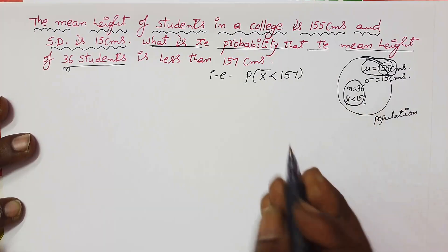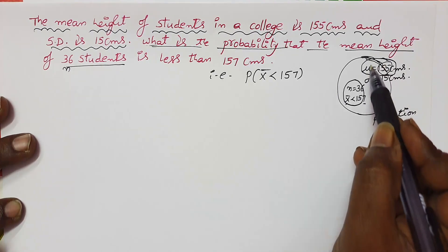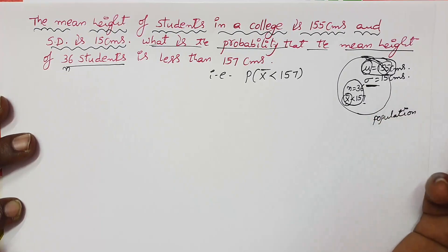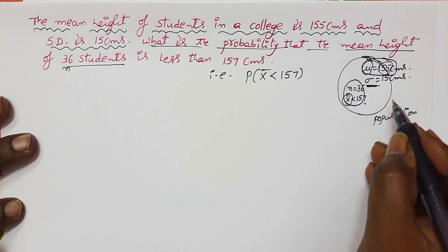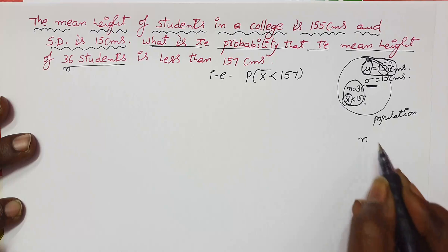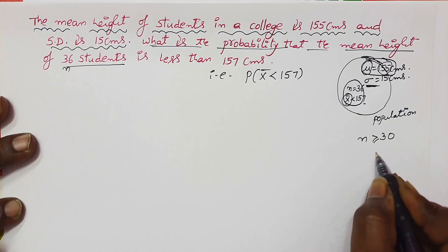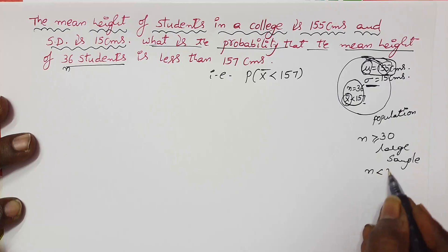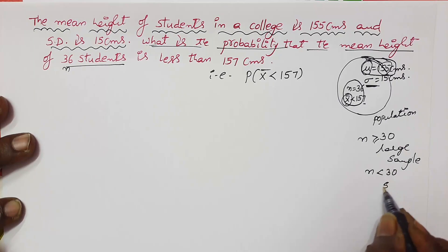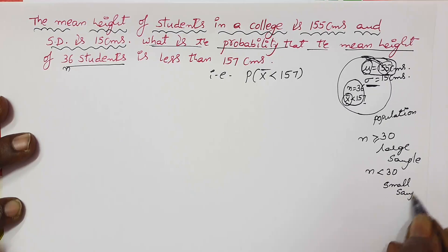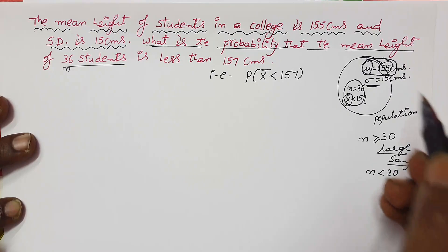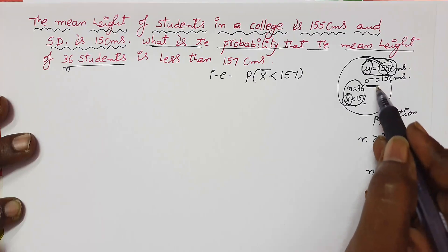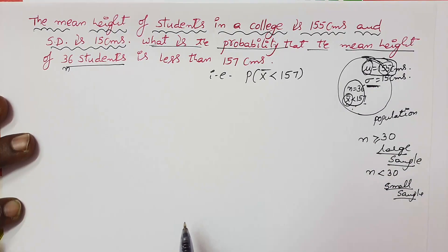Don't forget the notations: population mean is represented by mu, sample mean by x̄, and population standard deviation by sigma. In the case of a large sample — where sample size n is greater than or equal to 30 — there is no difference between population standard deviation and sample standard deviation; both are the same. But for a small sample (n less than 30), they differ.